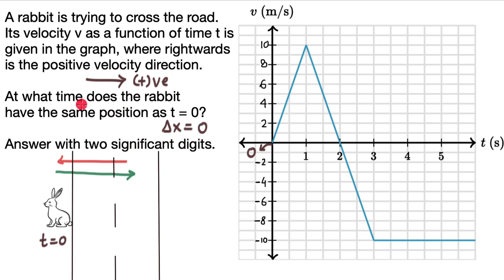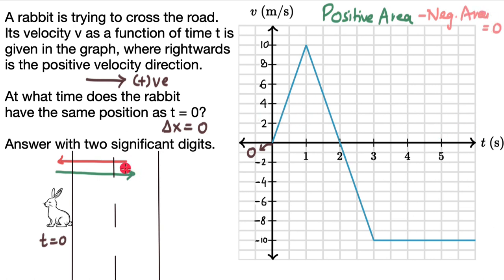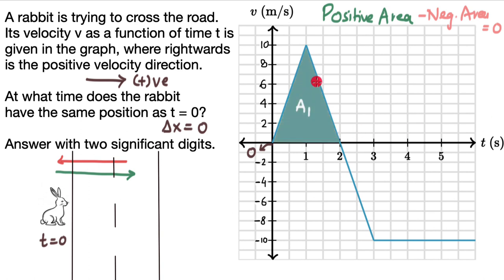We need to figure out at what time this happens. For the displacement to be equal to 0, the positive area and negative area should be equal. Let's figure out what the areas are. At t equals to 0, there is some positive area — let's shade that. We can figure out the area because this is a triangle. Triangle's area is half times base times height, so this would be half times 2 (the base) times 10 (the height). The area is 10 meters, meaning the displacement is 10 meters.